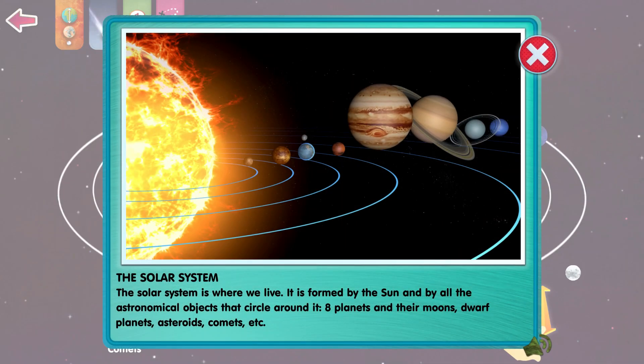The Solar System is where we live. It's formed by the Sun and by all the astronomical objects that circle around it. Eight planets and their moons, dwarf planets, asteroids, comets, etc.